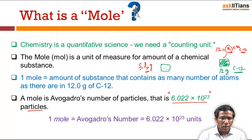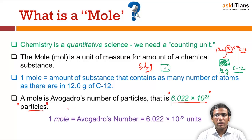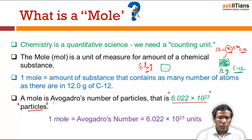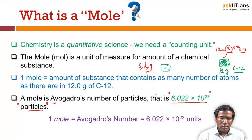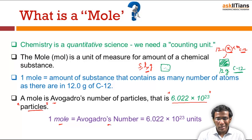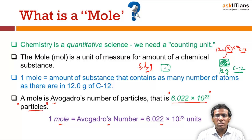Here I am using the general term 'particles' because the particles may be atoms, molecules, electrons, ions, or formula units. One mole contains 6.022 × 10²³ particles, and this number is known as Avogadro's number. So one mole equals Avogadro's number, that is 6.022 × 10²³ number of units or particles.